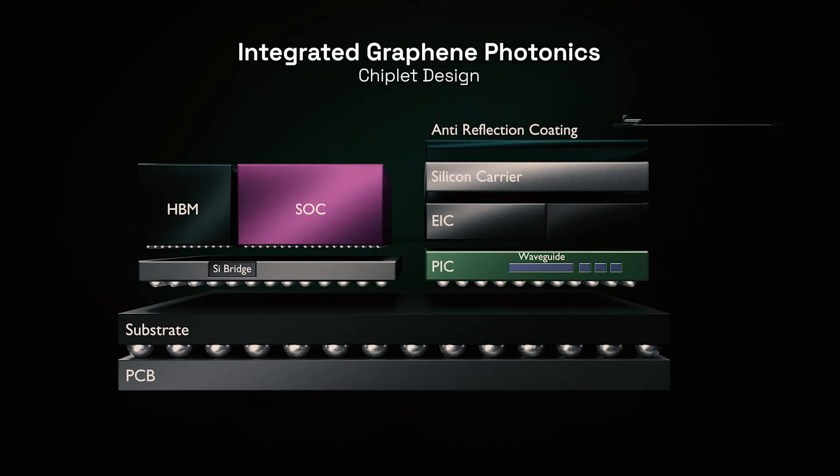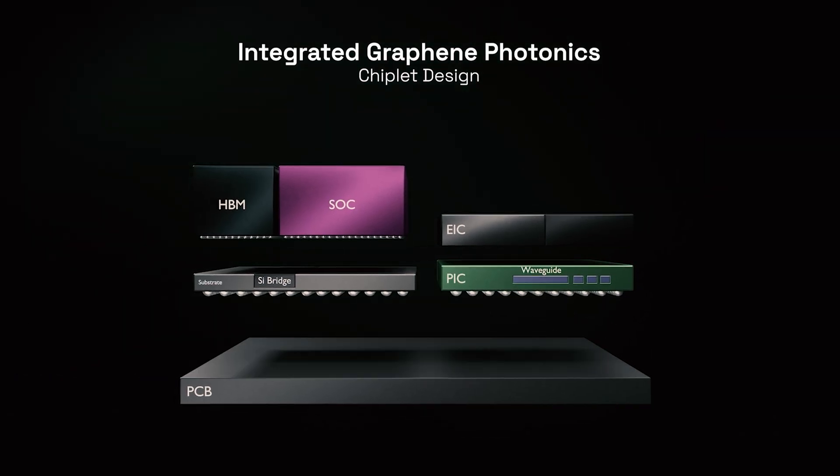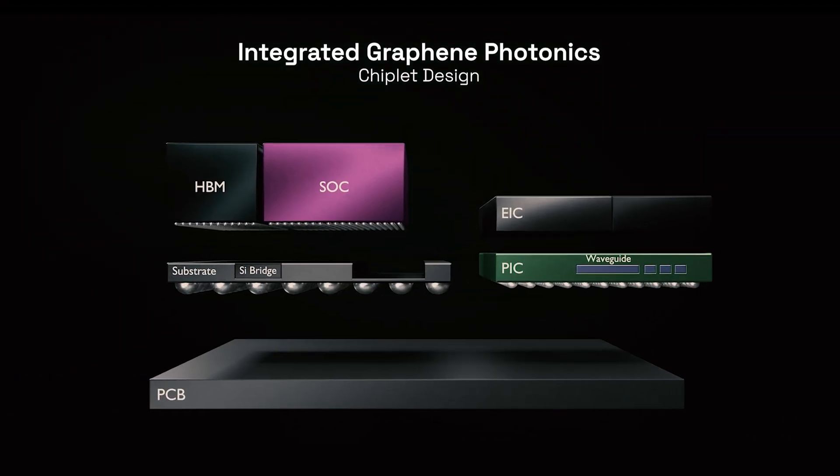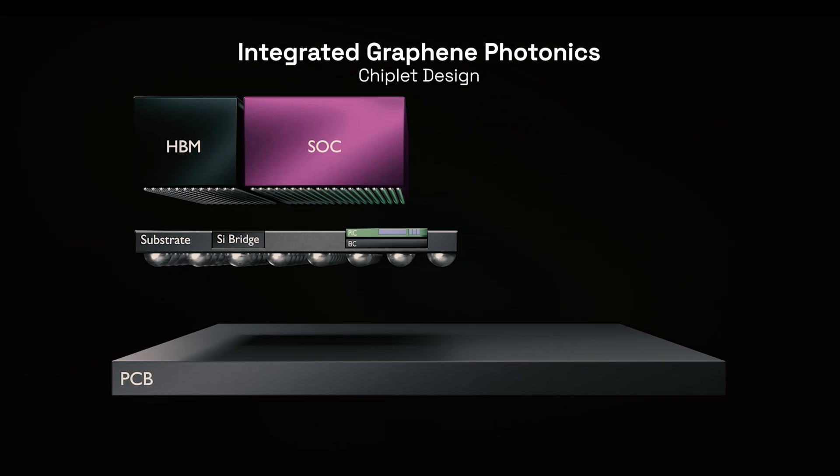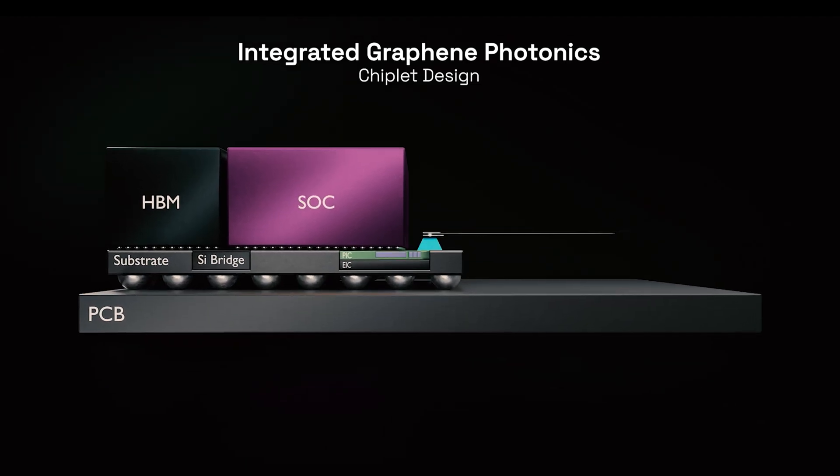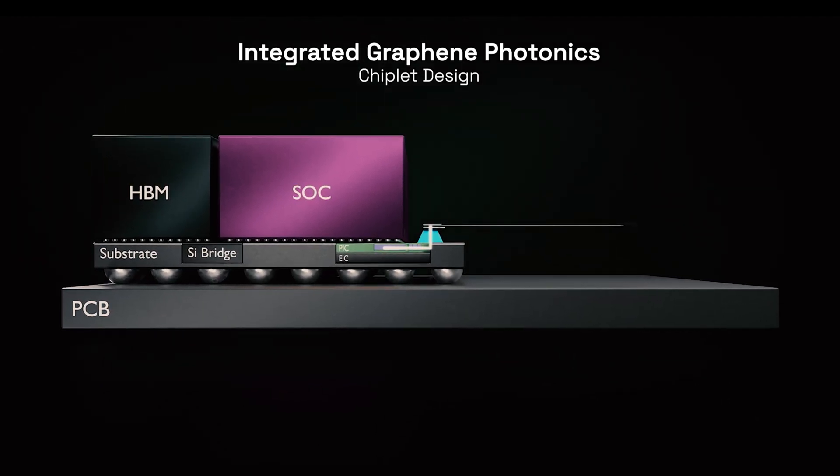Compared to today's co-packaged optics, integrated graphene photonics delivers better performance at a lower cost, with greater design flexibility, and it's fully back-end-of-line compatible, so you can seamlessly integrate onto any chiplet in any CMOS process node.